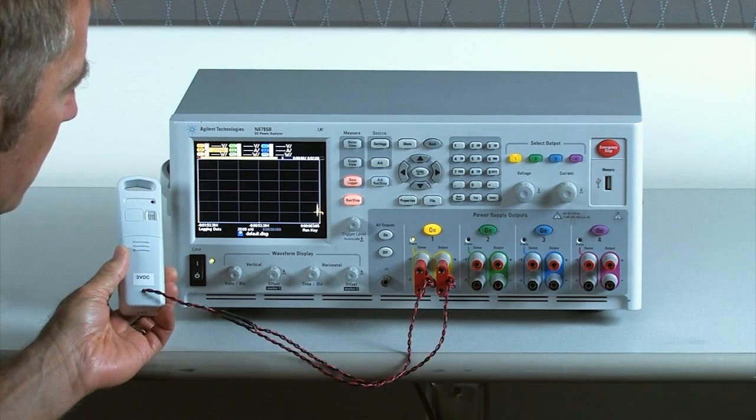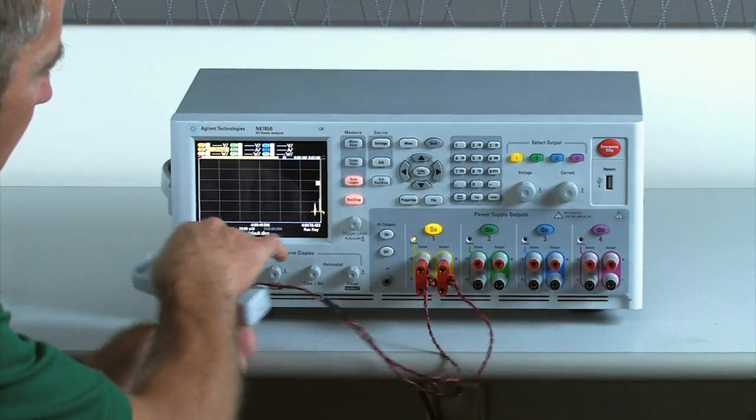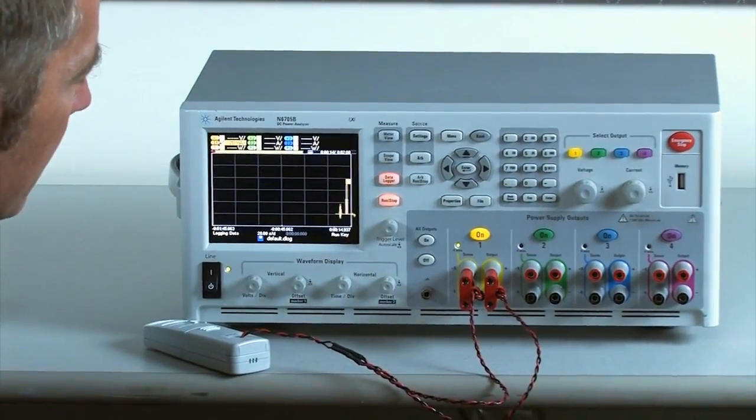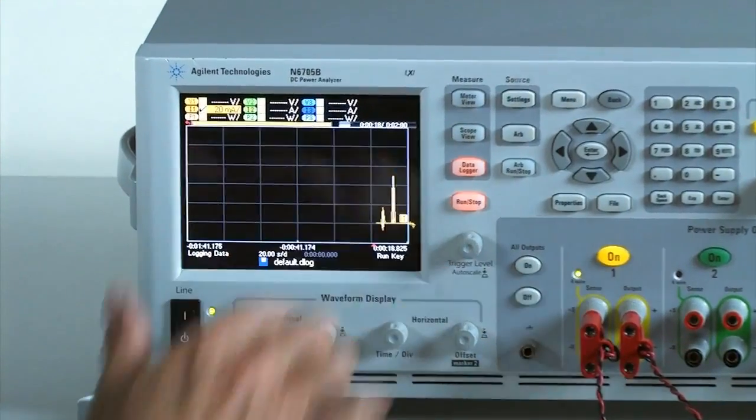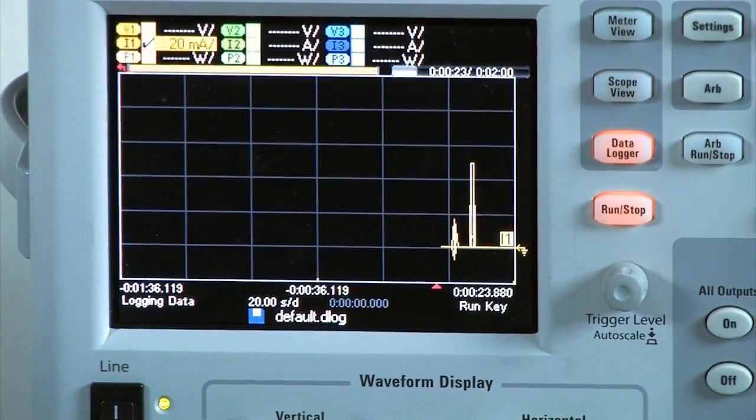And so we'll see some current being drawn from the temperature sensor as it turns on, and then it returns back to an idle state. So it's pulling very little current. And then we see our first pulse of current, and that's the wireless temperature sensor sending out its data.